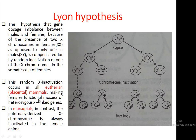This random X inactivation occurs in all eutherian placental mammals like humans, making females functional mosaics of heterozygous X-linked genes. In all eutherian placental mammals, which X chromosome is inactivated — whether coming from paternal or maternal origin — is determined only by randomization. We cannot say which X chromosome is likely to be inactive. But in the case of marsupials, we can definitively say that the X chromosome coming from the paternal genes is always the one that becomes inactive.